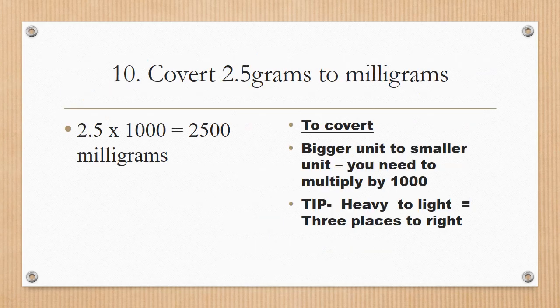Next question: convert 2.5 grams to milligrams. Converting from a bigger unit to a smaller unit, multiply by 1000, which means moving the decimal point three places to the right. So 2.5 × 1000 = 2500 milligrams.